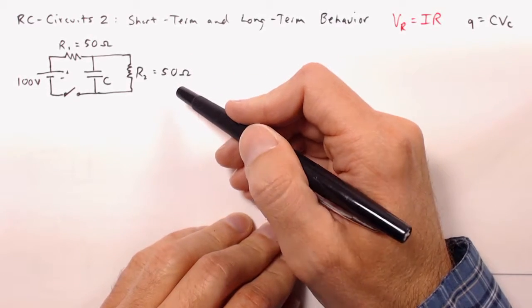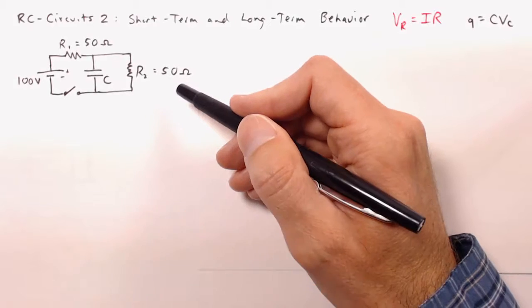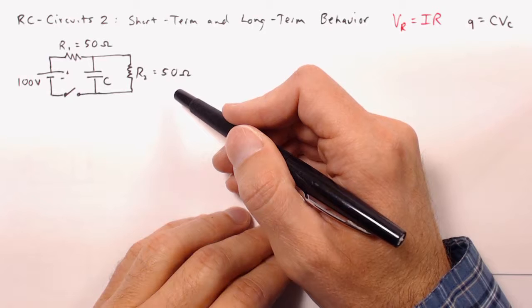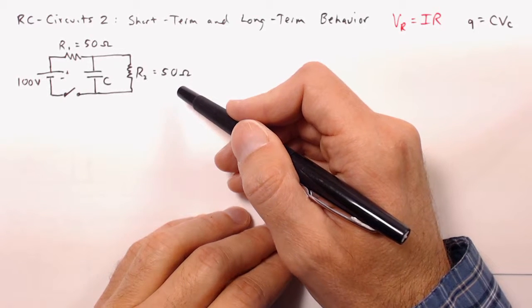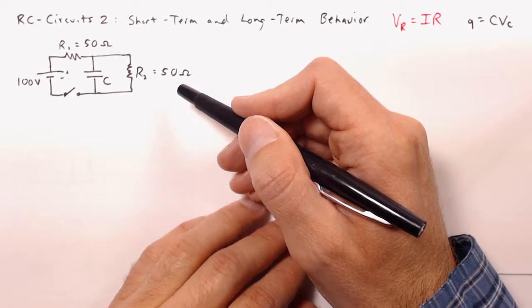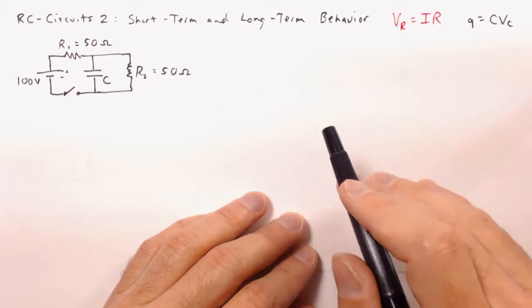Now there are ways to find in great detail mathematically what is going on with the circuit, but they require differential equations, and that's above and beyond the scope of a typical introductory level physics class. So instead of doing that, I'm going to show you a couple of special cases that you can calculate even without all of that fancy math, namely the short-term and the long-term behavior.